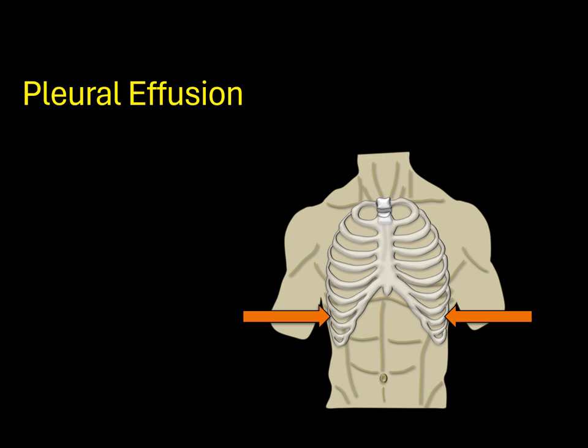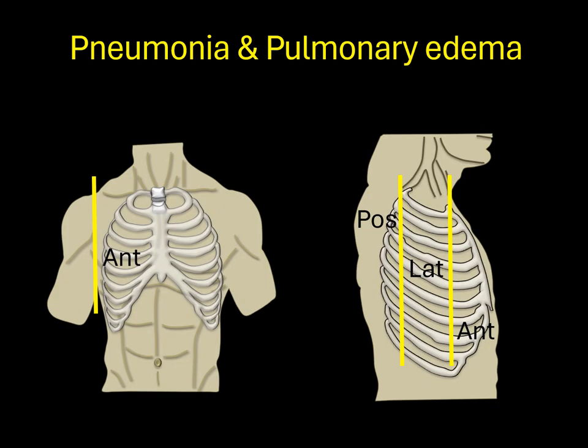If you're evaluating for a pleural effusion, you want the patient seated upright or nearly upright, since fluid gravitationally flows to the bottom of the lung cavity and you'll visualize it at the costophrenic angles. If you're evaluating for pneumonia or pulmonary edema, position the patient upright or semi-recumbent and use a curvilinear probe. The most common way to evaluate lung spaces is to break the lung into three zones — anterior, lateral, and posterior — using the anterior and posterior axillary lines as boundaries, giving six lung zones total.